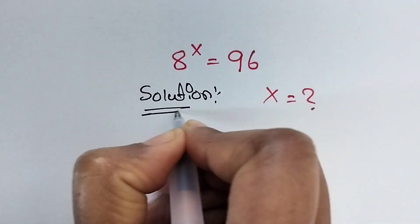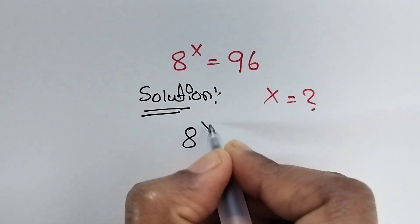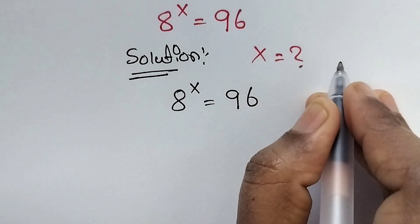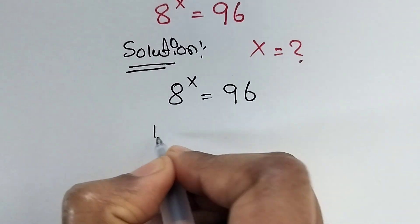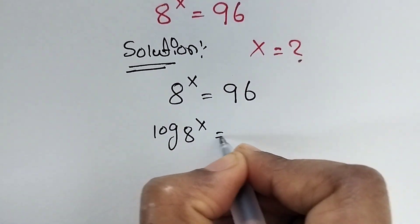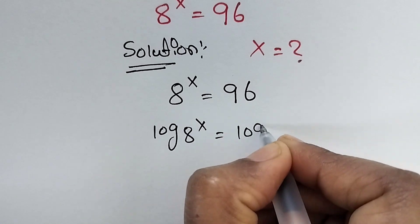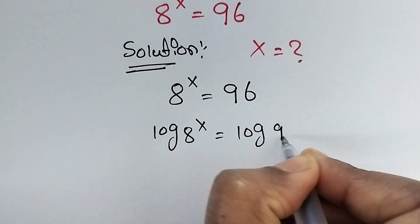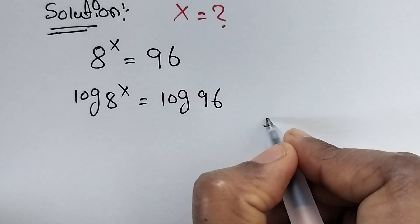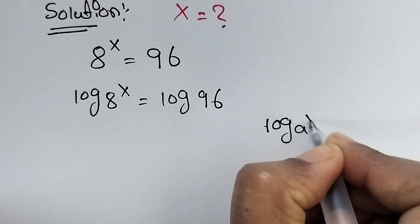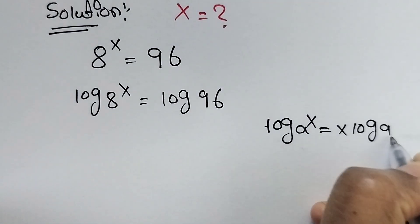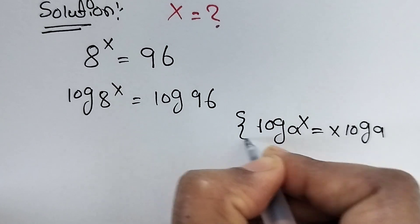So here we have given 8 to the power of x is equal to 96. So apply log on both sides: log 8 power x equals log 96. So here use this formula — log a to the power of x is equal to x log a. So use this formula.